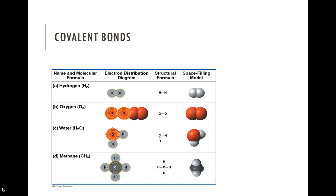We see some different covalent bonds here. Hydrogen is a very common molecule — it doesn't like to hang out by itself, as it has a single electron it likes to share. Oxygen forms a double bond with itself. The electron distribution diagram shows the shells, the electrons, and the sharing of four electrons — that's the double bond, where each pair of electrons constitutes one bond. We also have the structural formula, which is the most simplified way we draw molecules, and the space-filling model that shows how atoms fit together.